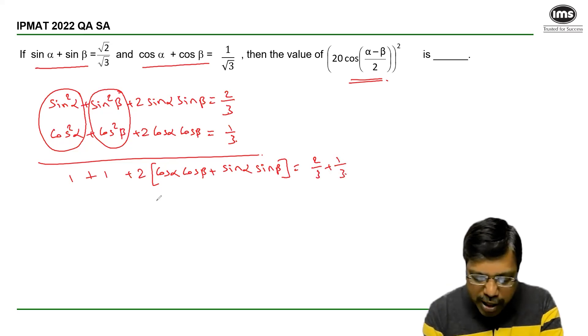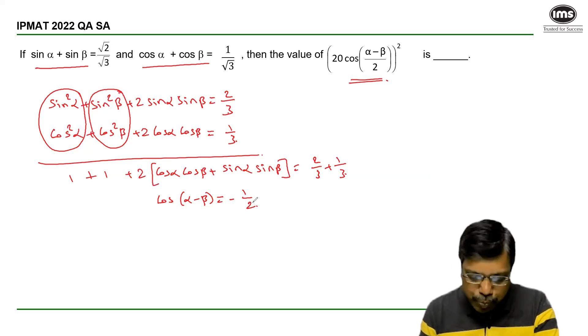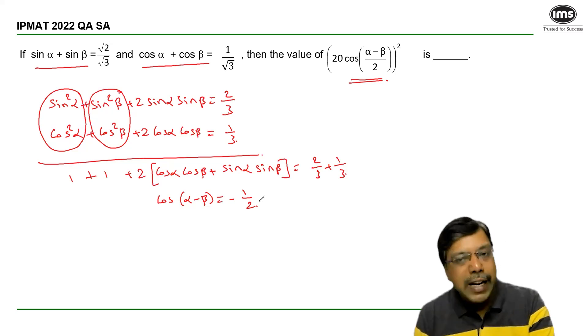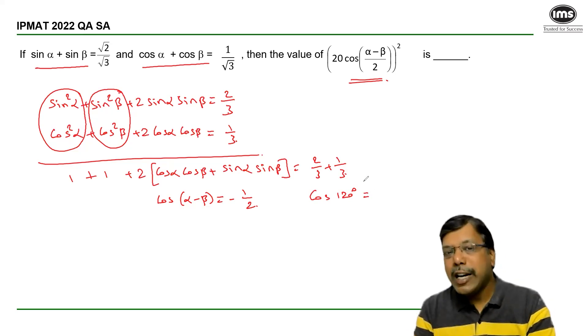So that gives me the value of cos alpha minus beta as minus 1 by 2. And since it's a short answer section, essentially we are talking about a unique value. So the angle for which cos alpha minus beta will be minus 1 by 2 is 120 degrees.